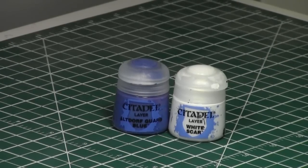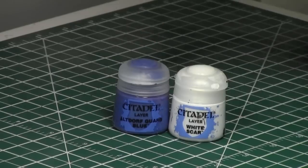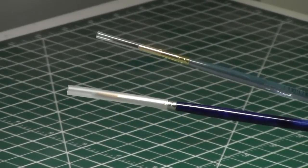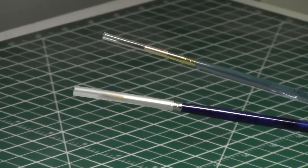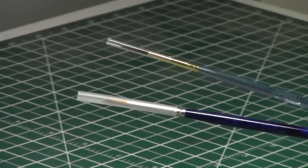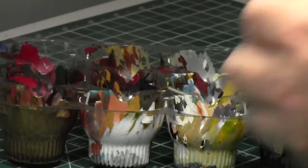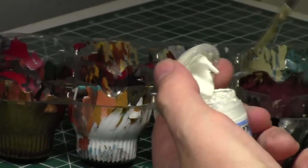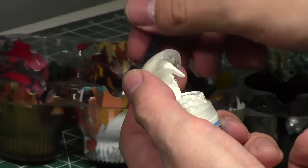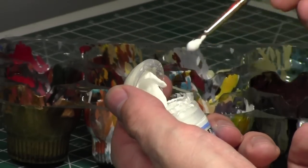Now the key to when you're two brush blending is you don't want to over thin down your paints because over thinning down your paints would be a big mistake, and you want to use two brushes of a pretty good consistency, like two brushes that you would trust. I'm going to use two brushes. I actually swapped out the one on the top. So I'm going to take my White Scar and it's a little thick to begin with, so that's why I'm going to thin it down a little bit. I'm going to put it in my palette and I'm going to thin it down slightly.